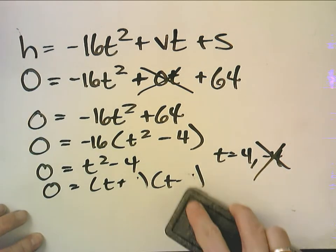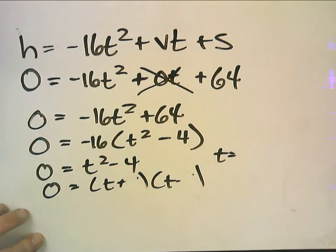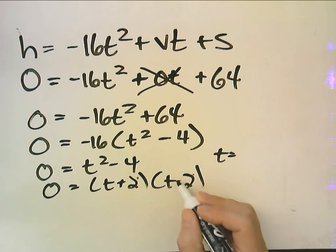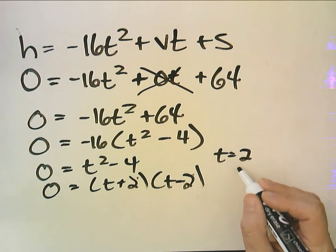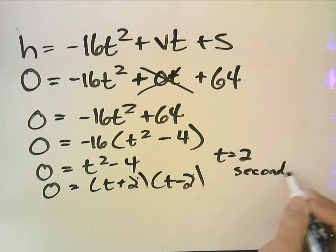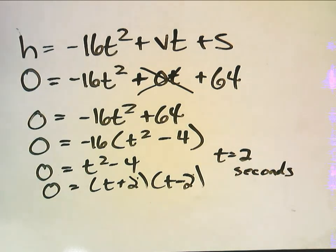See what I did there, that is not correct because the difference of squares would be t plus 2 t minus 2, so the answer would be t equals 2 seconds. And that's the end of this video.